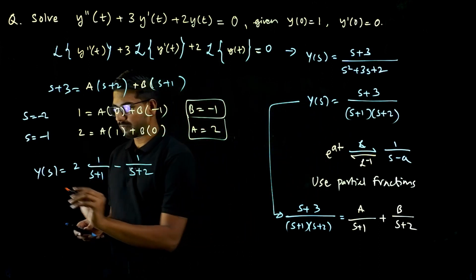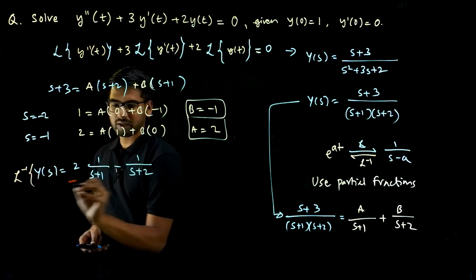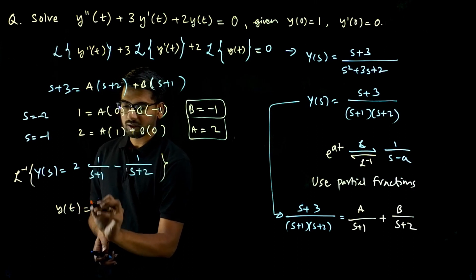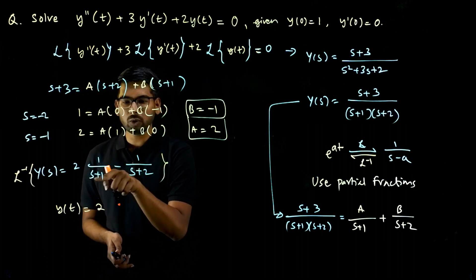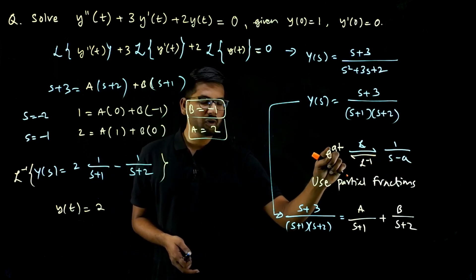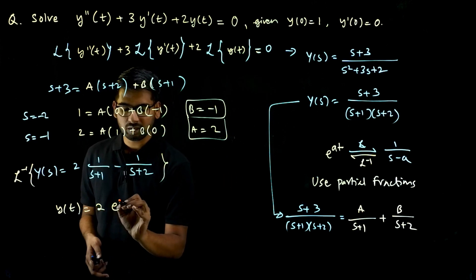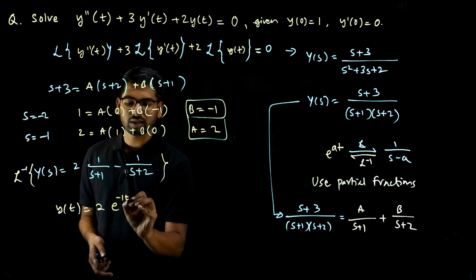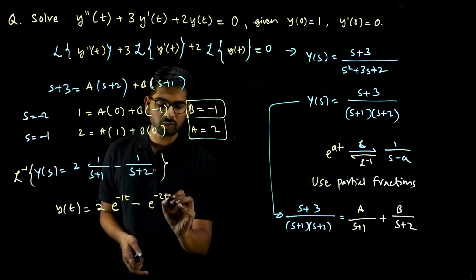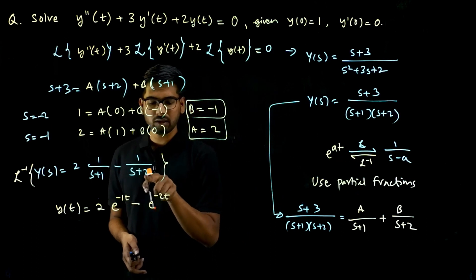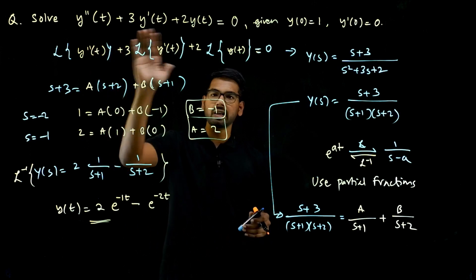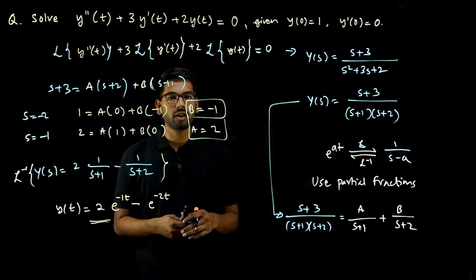Taking the inverse Laplace transform: Y(t) = 2·e^(−t) − e^(−2t). This is because the inverse Laplace transform of 1/(S + 1) is e^(−t) and of 1/(S + 2) is e^(−2t). This is the complete solution to the differential equation using Laplace and inverse Laplace transforms.